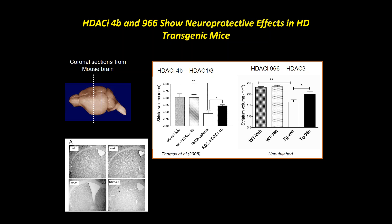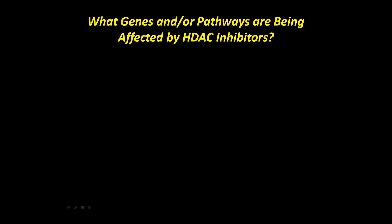We also examined the brains of these mice for neuroprotective effects. After drug treatment, we measured striatal volume from coronal brain sections. Most mouse models don't show overt neurodegeneration but do exhibit brain shrinkage — the R6/2 HD transgenic mouse has a smaller striatum and correspondingly larger ventricles compared to wild-type mice. The striatum controls movement and is the brain region most primarily degenerated in HD patients, with the cortex also affected. Both of our compounds — 4B and 966 — prevented this striatal shrinkage.